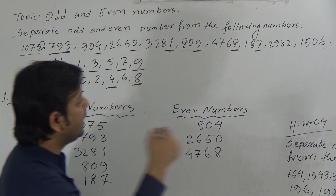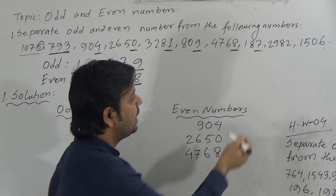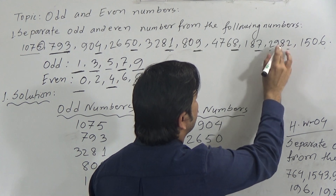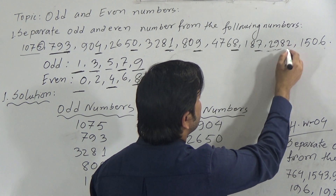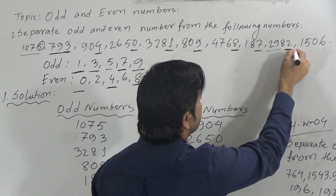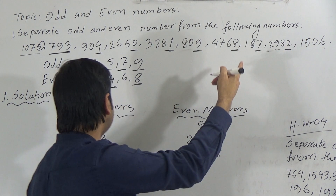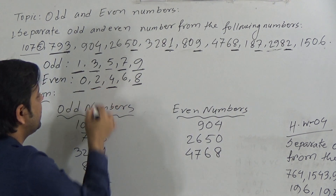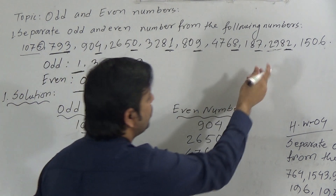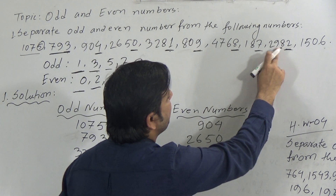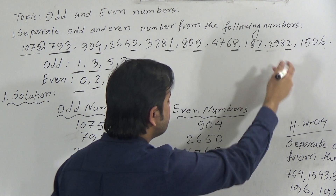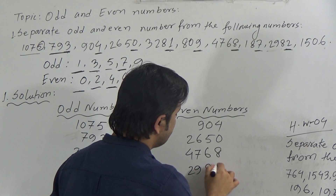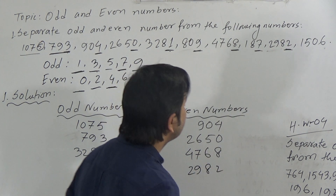Now go to the next number. The next number is 2982. Here the unit place is 2, and 2 is even, so 2982 is even. We write 2982 under the even column.